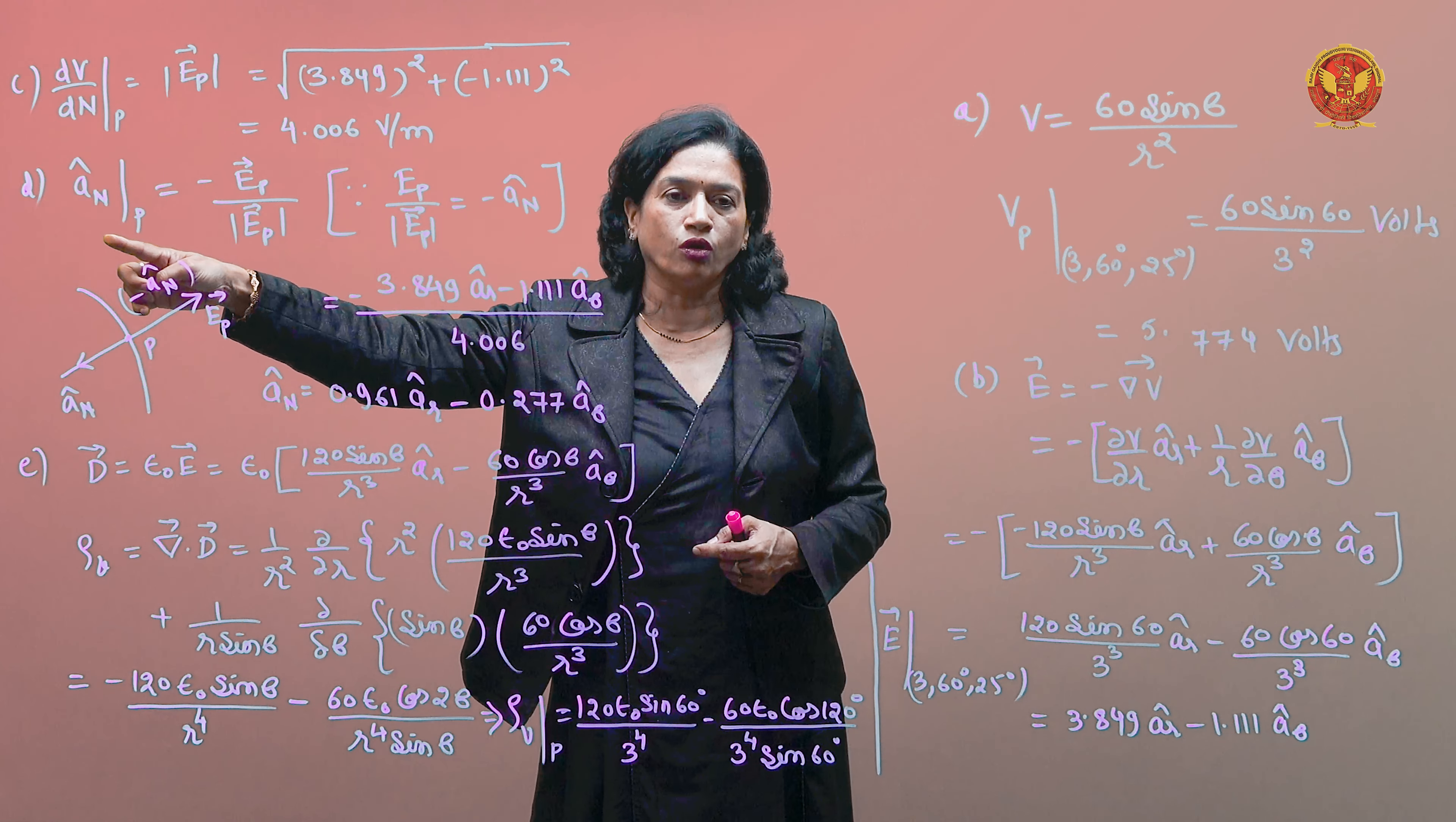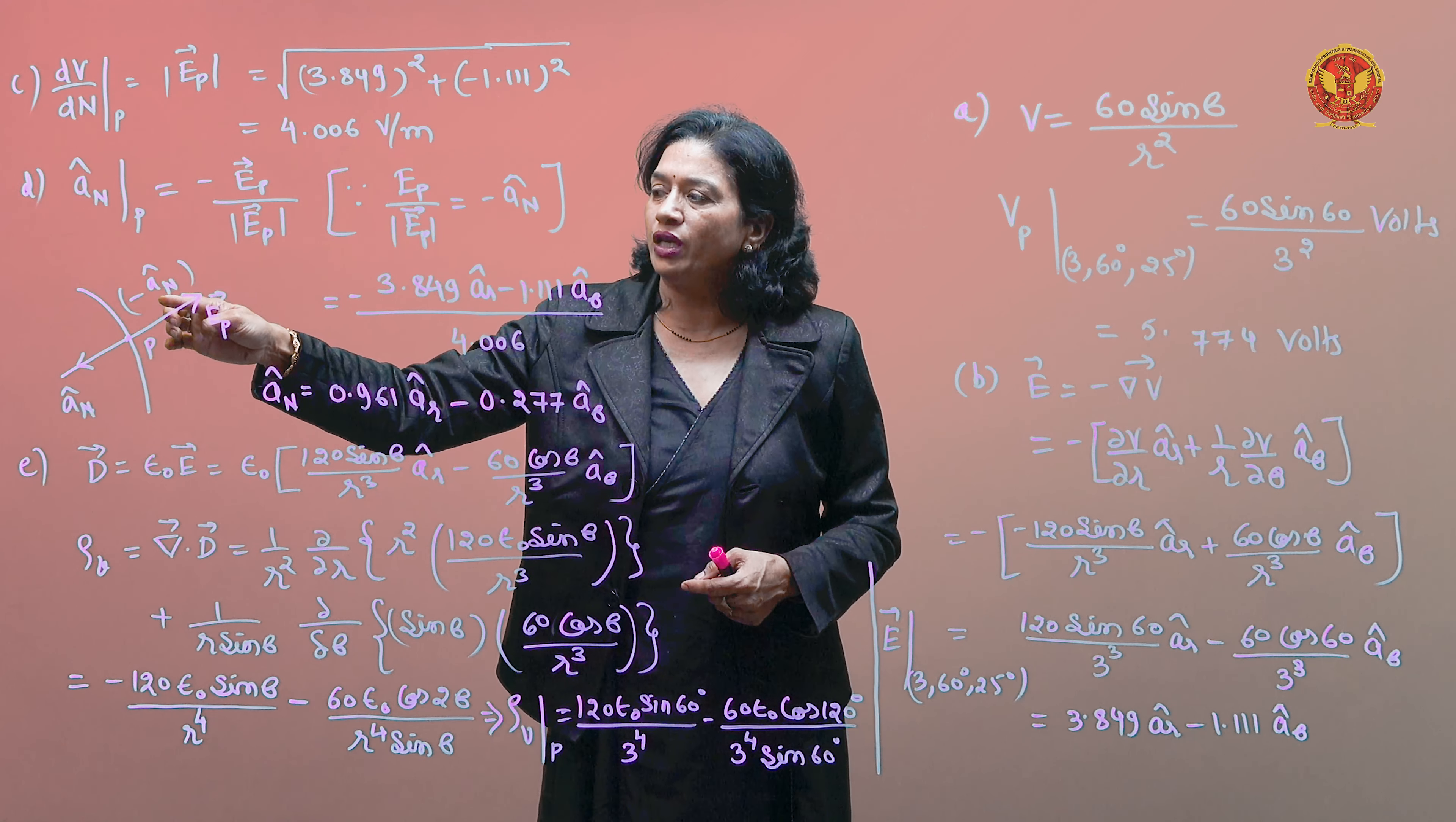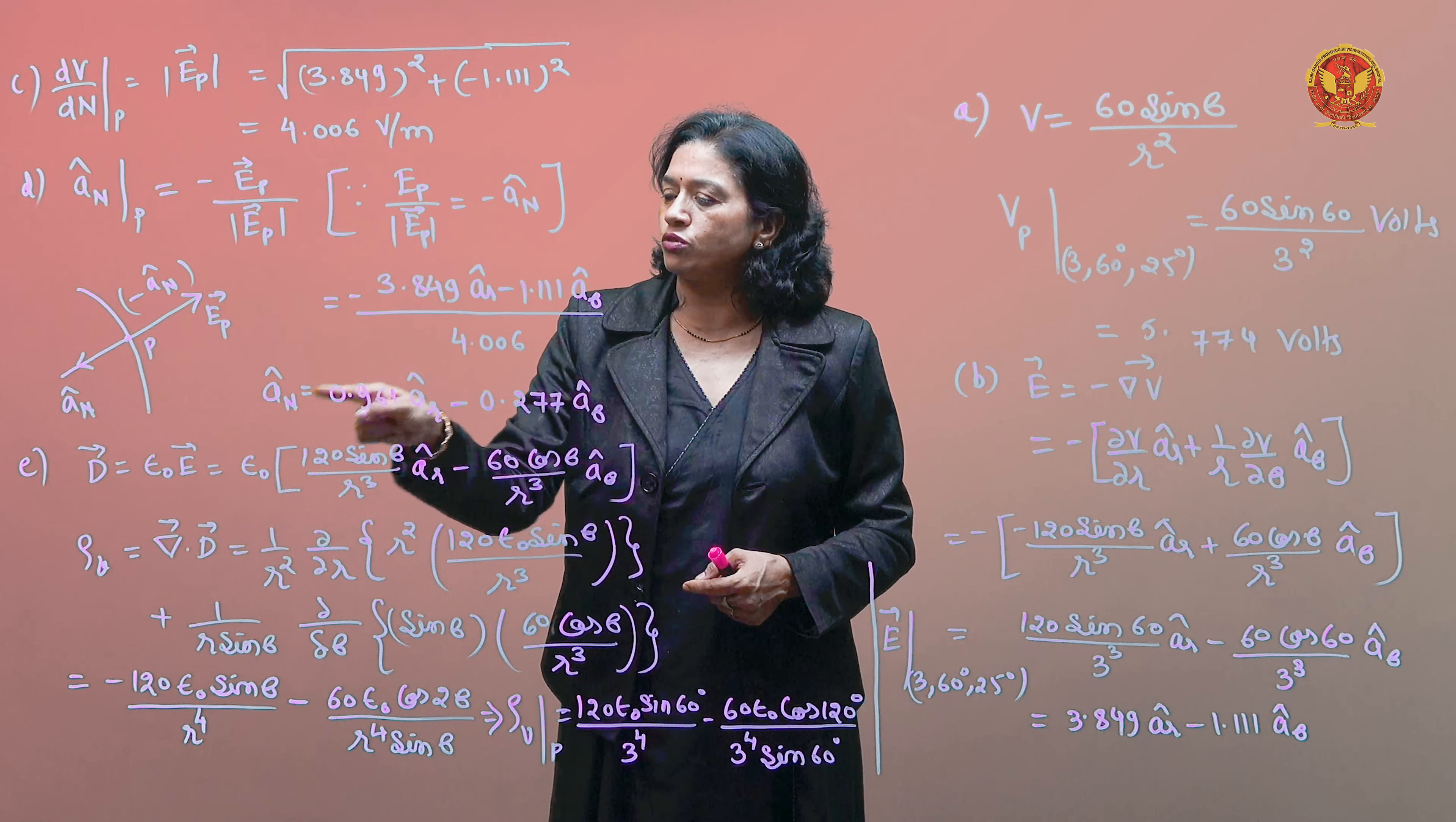If we want to find the normal unit vector at P point, in theory we have defined that an direction will be minus Ep direction. I can find an vector, so Ep vector divided by Ep magnitude. If I put minus sign, Ep direction upon Ep magnitude, so I will get this unit vector.